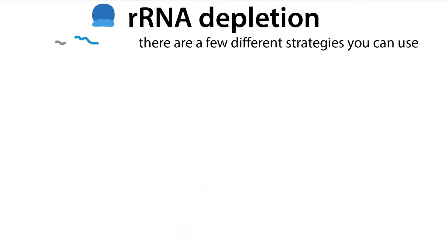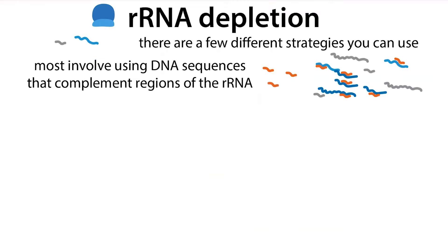Whether you're doing ribosome profiling, mRNA sequencing, or total RNA sequencing, you'll need to deal with that ribosomal RNA. There are a few different strategies, and a lot of them involve using DNA sequences — oligos, these short DNA sequences — that complement regions of our rRNA, meaning they can form specific base-pairing interactions with them, like the interactions between strands of DNA.